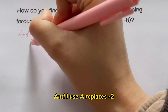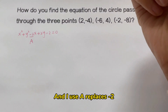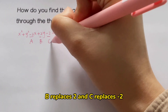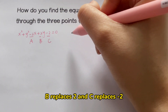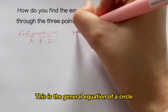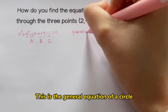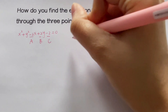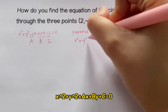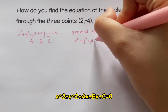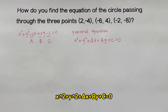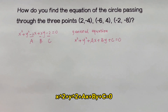I use 'a' to replace minus 2h, 'b' to replace 2k, and 'c' to replace the constant term. This is the general equation of a circle: x squared plus y squared plus a times x plus b times y plus c equals 0.